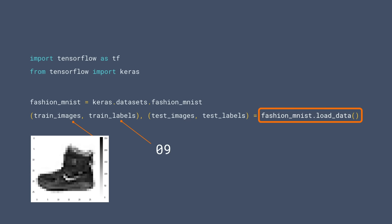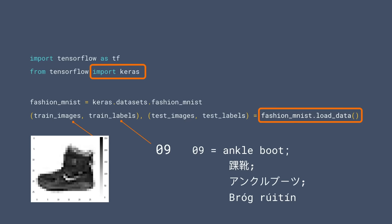There are two main reasons. First, computers deal better with numbers. But perhaps more importantly, there's the issue of bias. If we label it as 'ankle boot', we're already showing a bias towards the English language. So by using a number, you can point to a text description in any language, as shown here. Can you guess all the languages that we used here?